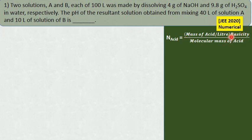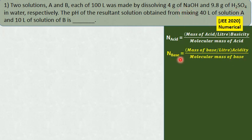Normality of acid equals mass of acid per liter multiplied by the basicity divided by the molecular mass. If you do not take the basicity, it becomes molarity; if you take the basicity, it becomes normality. Basicity of the acid is the number of replaceable hydrogen ions. For the base, normality equals mass of base per liter multiplied by the acidity divided by molecular mass. Acidity is the number of replaceable hydroxyl groups present in the compound.